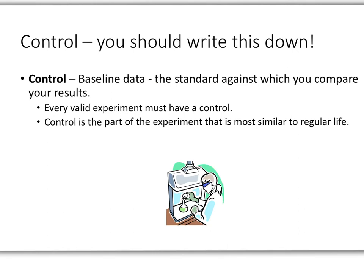Alright, here's another really important part of a valid experiment. You have to have a control. You should write this down. A control is your baseline data. It's like the regular, everyday thing. You're going to compare your results against this control standard. So you have to have it in order to make a valid experiment.